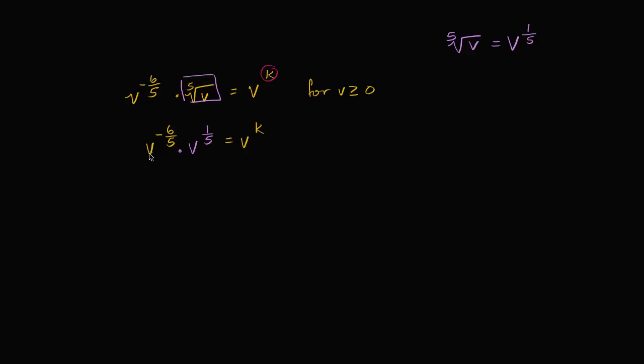Now, if I'm multiplying v to some power times v to some other power, we know what the exponent properties would tell us. I'll remind us: if I have x to the a times x to the b, that's going to be x to the a plus b power.